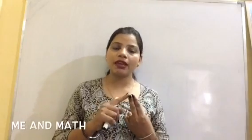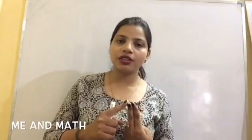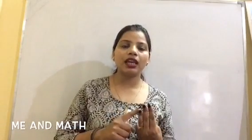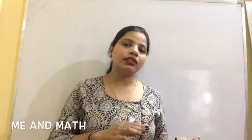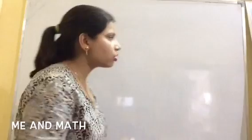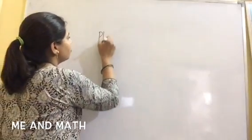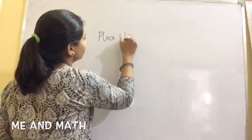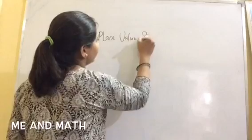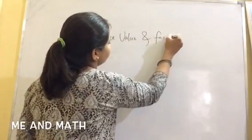The topic which we will be discussing today is place value and face value. First topic we will cover is place value and face value. The next topic is three-digit and four-digit numerals, and the third topic is naming numbers - how we will name a number. So let's start with our first topic, that is place value and face value.